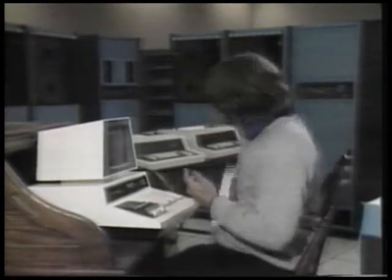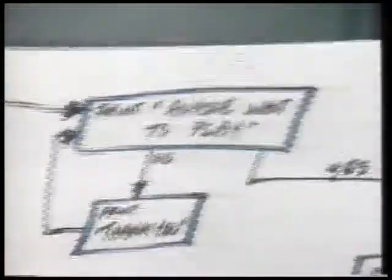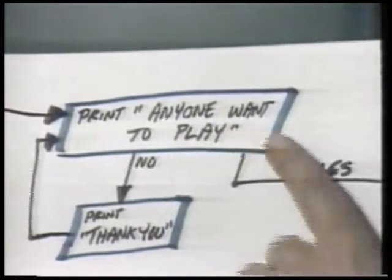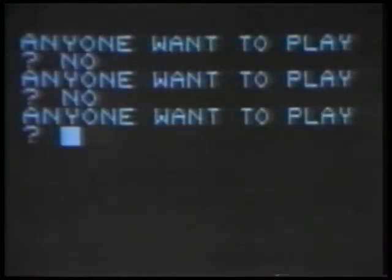I have a game in here to ask some questions, check the answers, and see if they're right. The first thing it's going to do is print 'Anyone want to play?' on the screen. If you put in 'no,' it'll print 'thank you' and go back and print 'Anyone want to play?' again. You can type 'no' all afternoon until you're blue in the fingers, and it will just keep saying 'thank you' and printing 'Anyone want to play?'